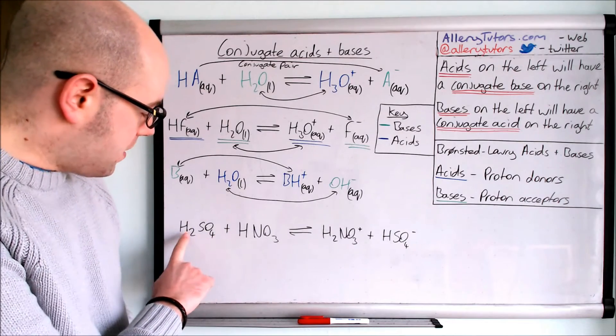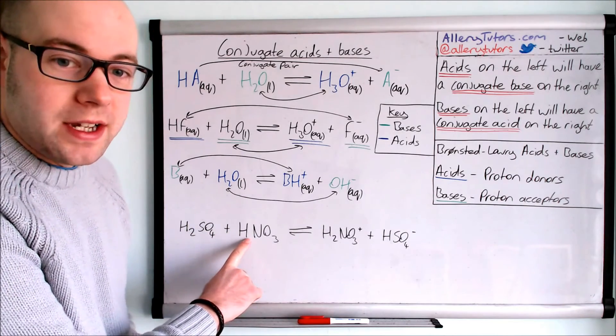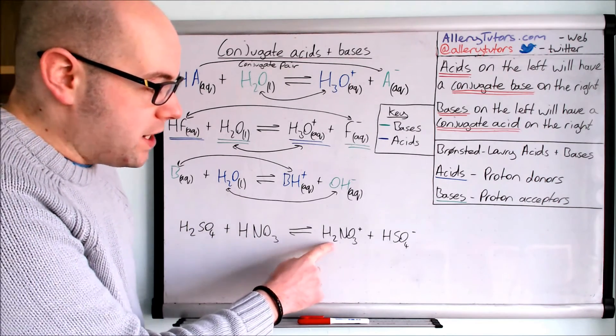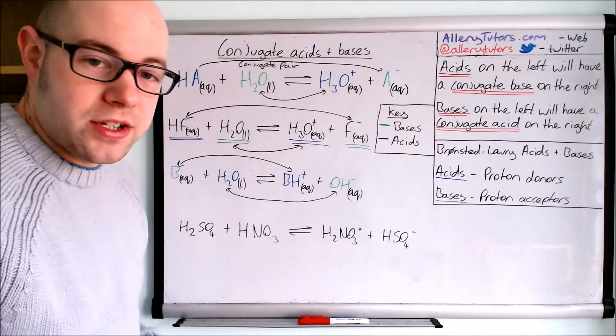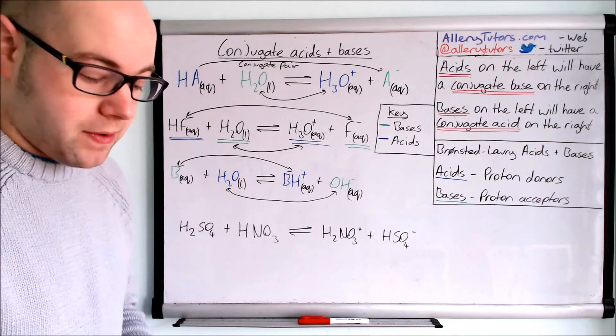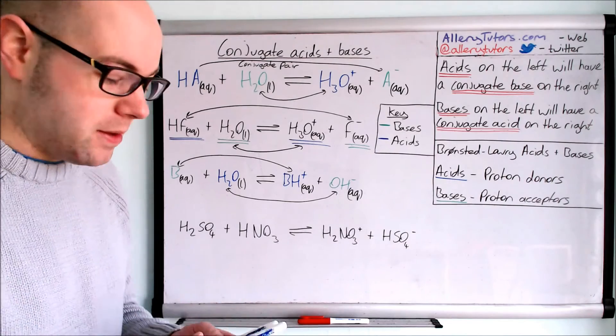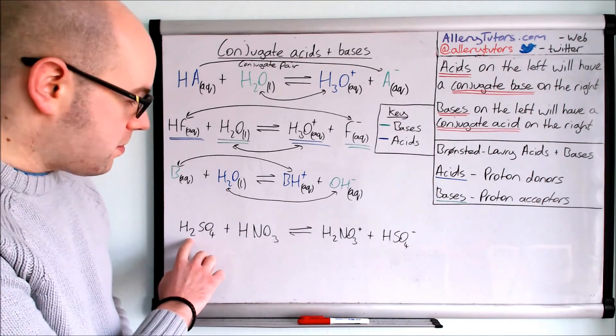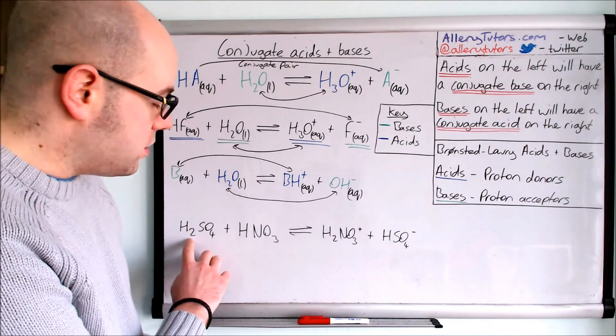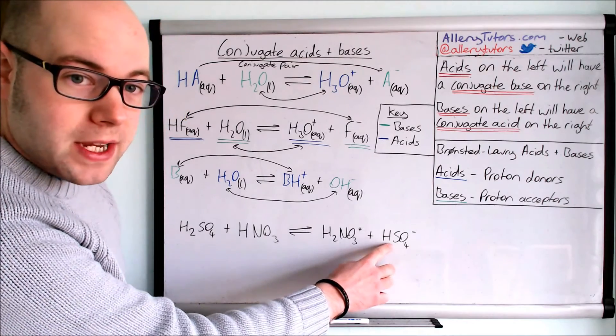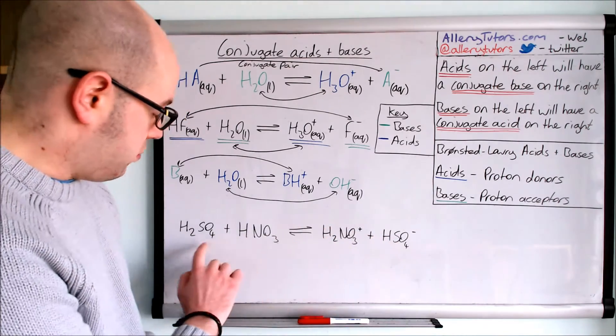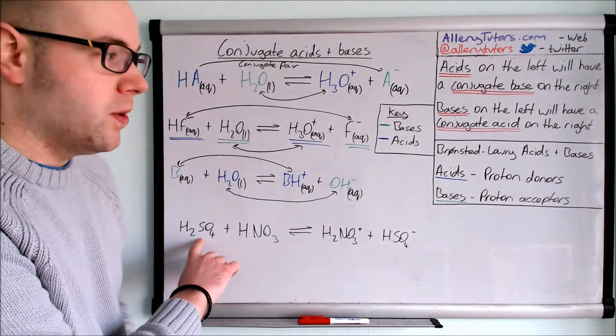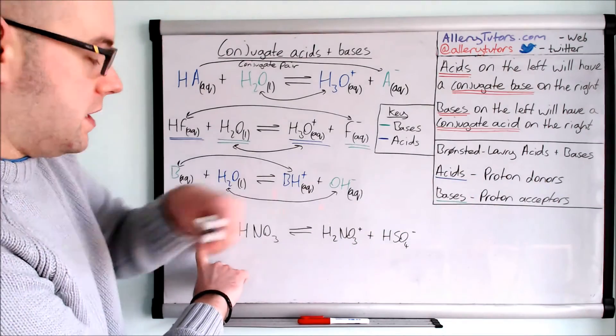You can see here H2SO4 is reacting with nitric acid HNO3 and that will form H2NO3+ plus HSO4-. So what you need to identify is your acid and bases and then you compare them up. So you can see here the H2SO4 has actually donated a proton because you see over here this has actually lost the proton. Because H2SO4 has donated a proton it's classed as the acid.